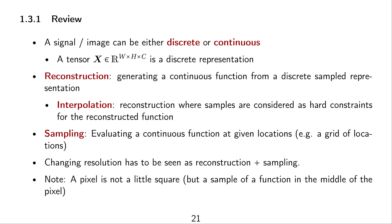Sampling is then the opposite of reconstruction. You are evaluating a continuous function at given locations, so sampling converts a continuous function to a discrete representation.